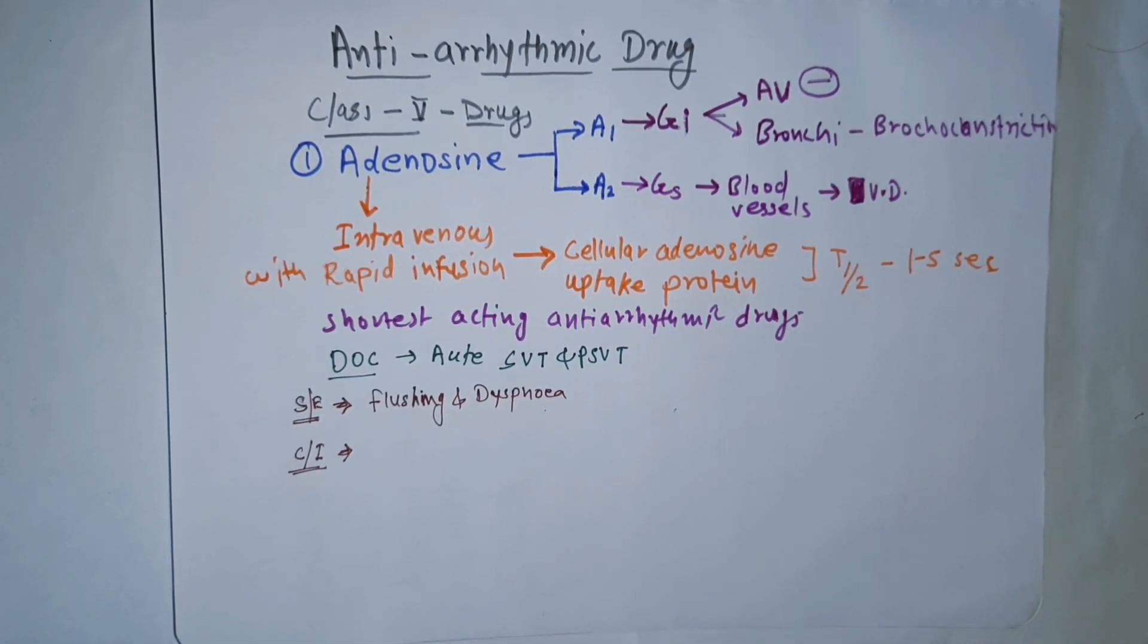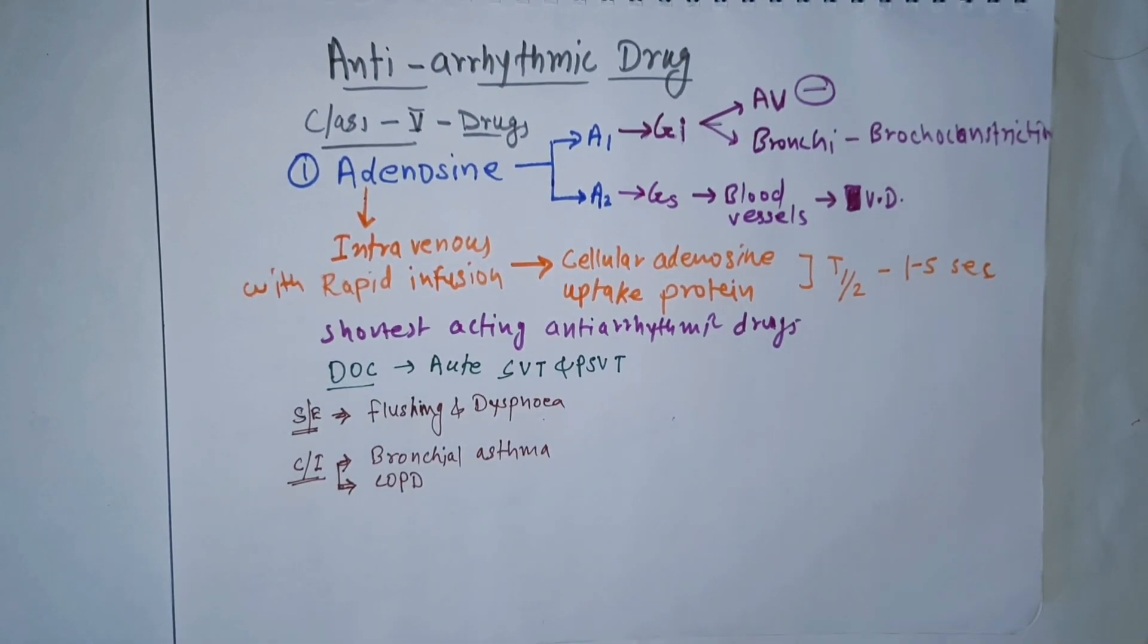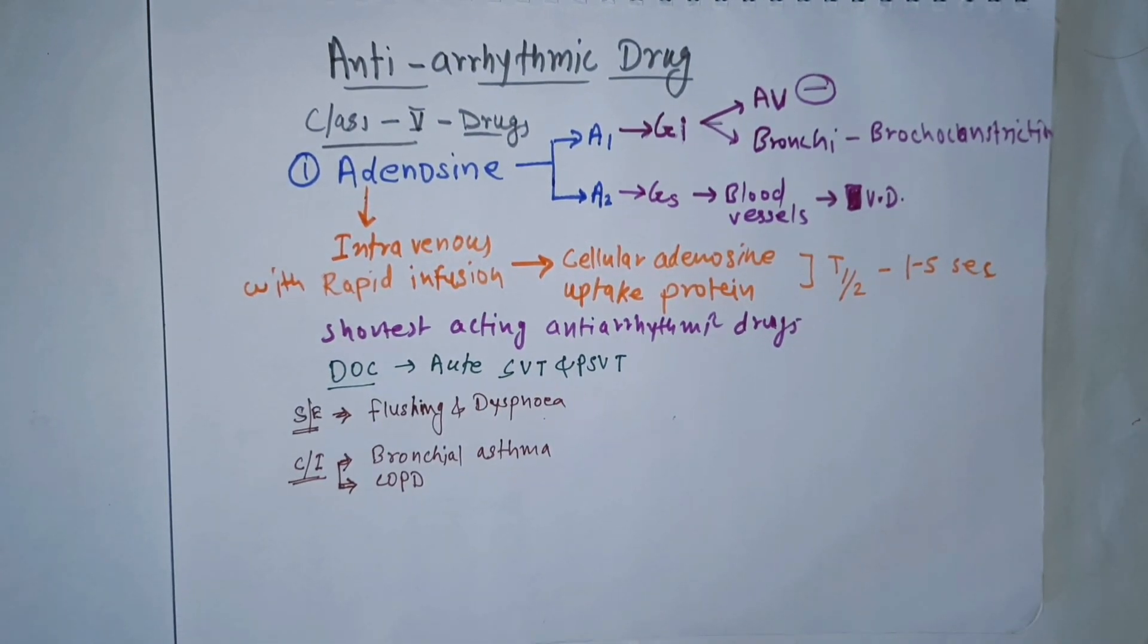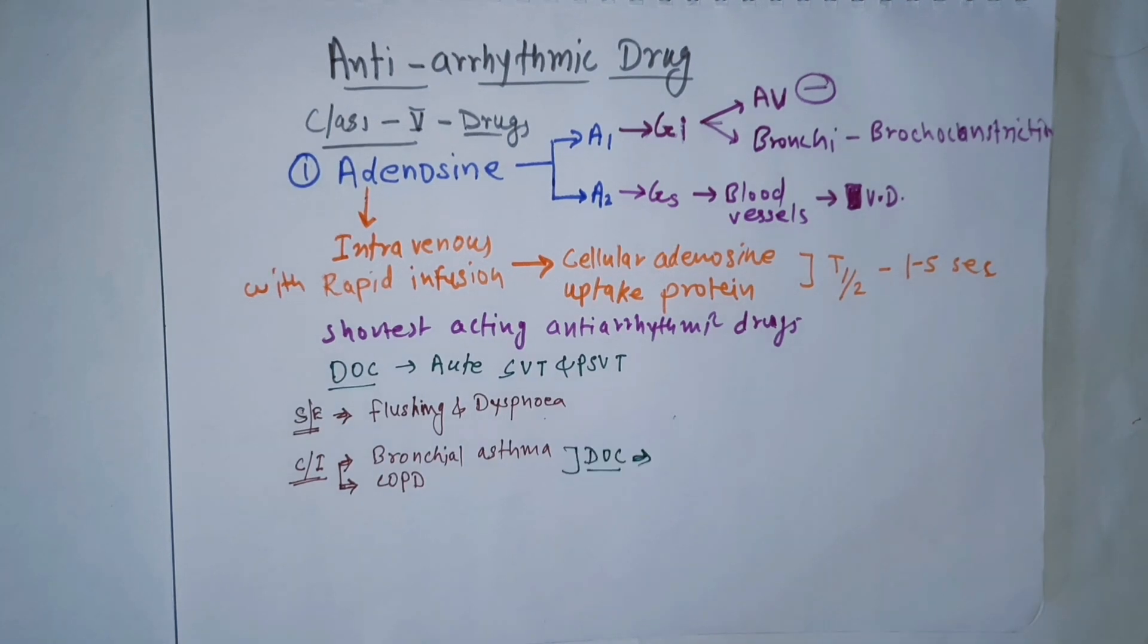Adenosine is contraindicated in patients with bronchial asthma and COPD because it causes bronchoconstriction. Since we cannot give beta blockers to these patients either, the drug of choice becomes verapamil.